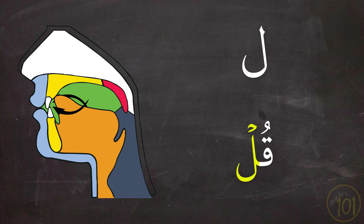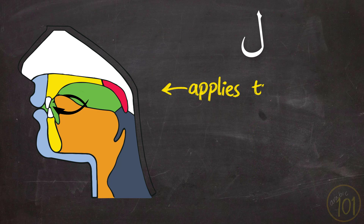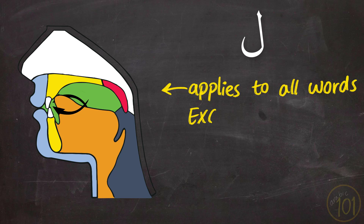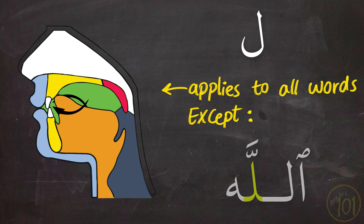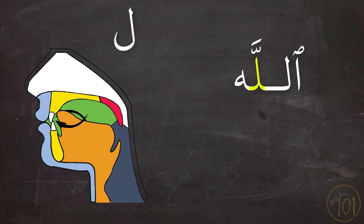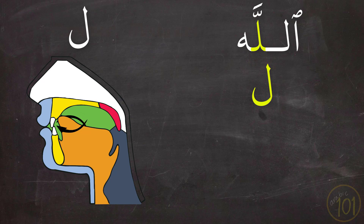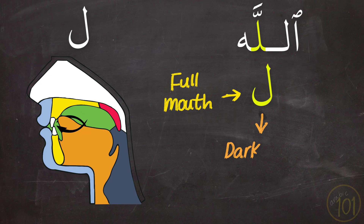This is how you pronounce the Laam in every single word in Arabic, except in one word. When it appears in the word Allah, the Laam will be pronounced slightly differently from all other words in Arabic. Specifically, it will be a full mouth Laam — or as we call it in English, the dark L, as in the word 'Laak'.